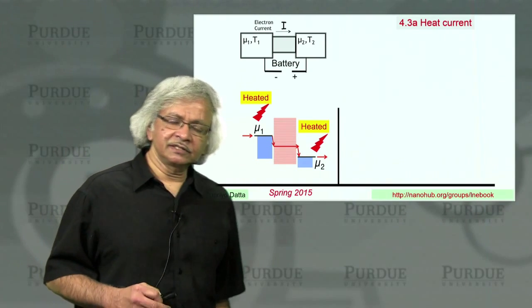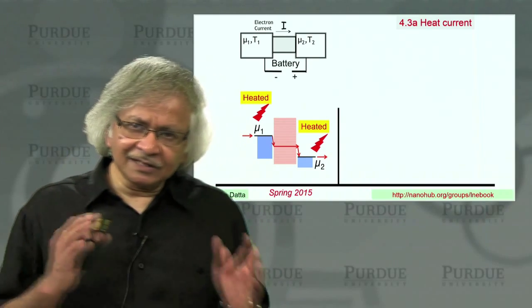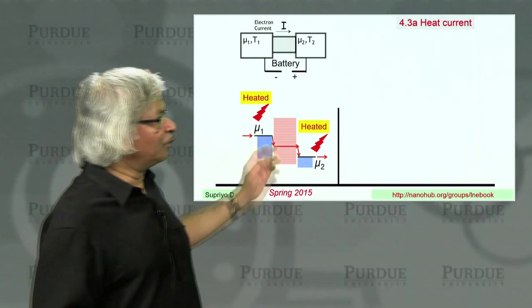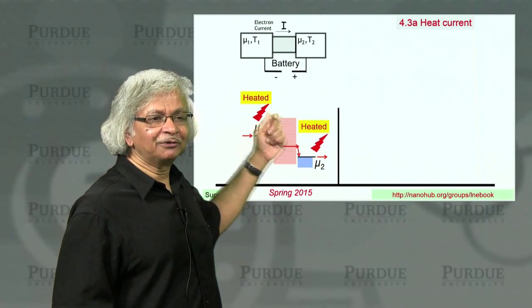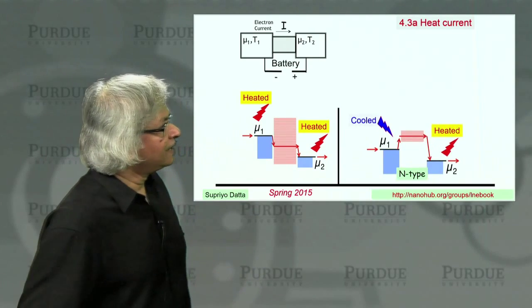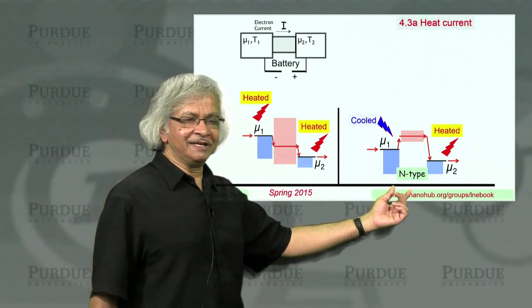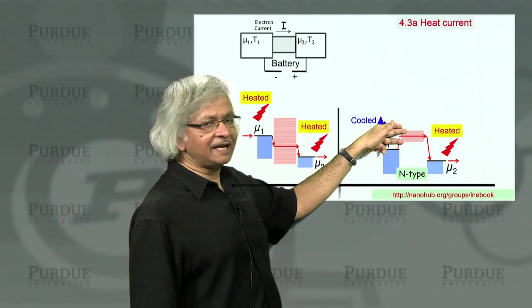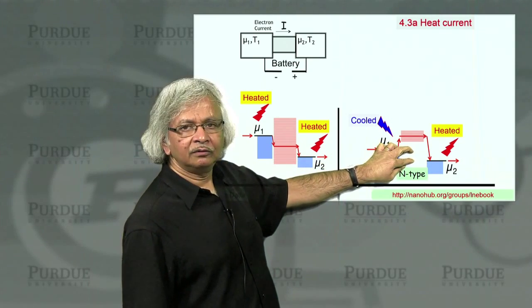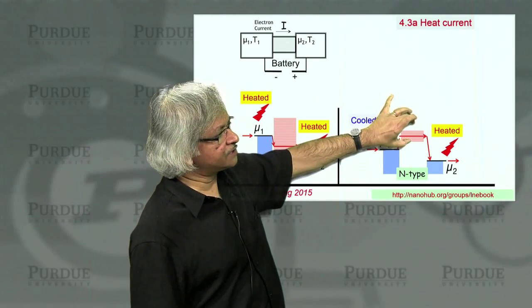What I want to point out is that, in general, that's the total heat dissipated, but both contacts need not be heated. One could be cooled, for example. Consider these n-type materials, which means where you have states available not in this window, but above this window. So you've got lots of states up here.